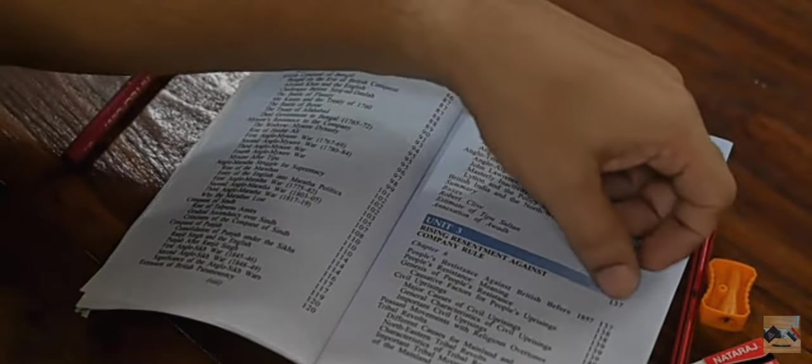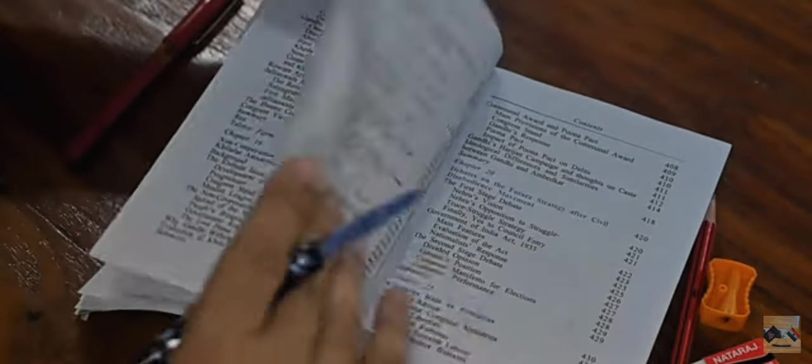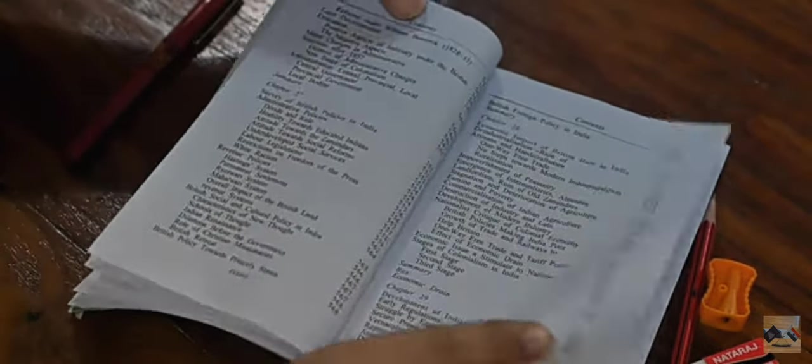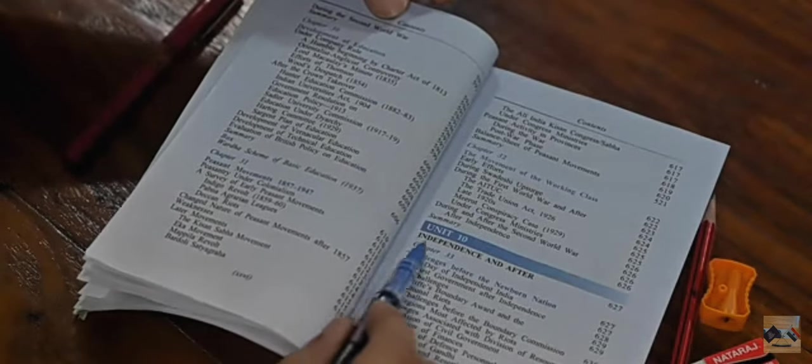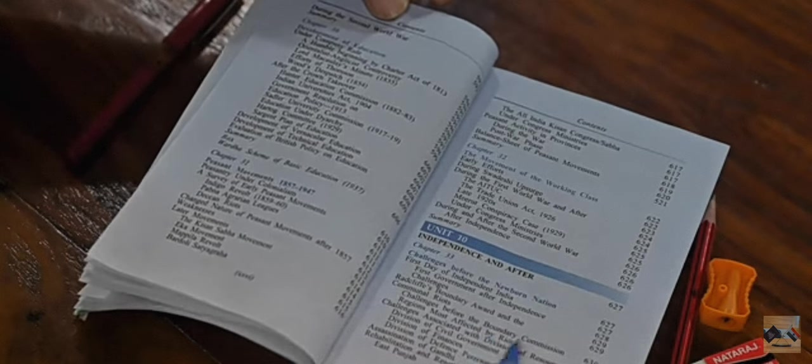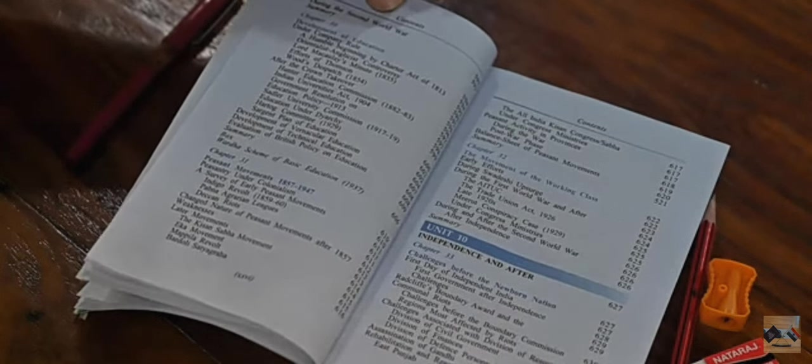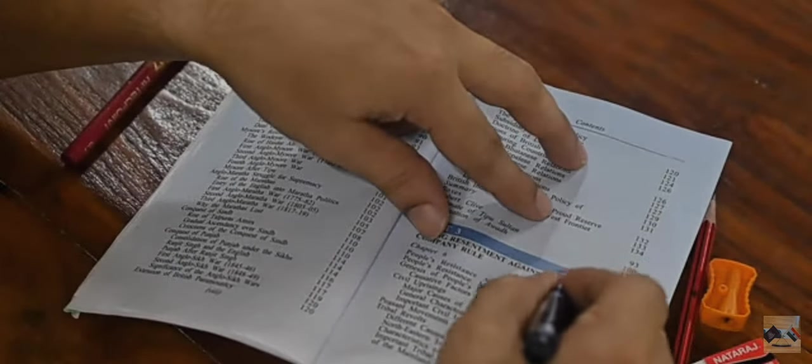So I've come to page 137, people's resistance against British before 1857. First of all, what I will do is count the total number of pages I have to study in this book. You have to read until page 626 because after that the book is about independence and after, which you can come back to for mains because this is not part of the prelim syllabus. So if you count, 626 minus 137 is around 500 pages you have to read.